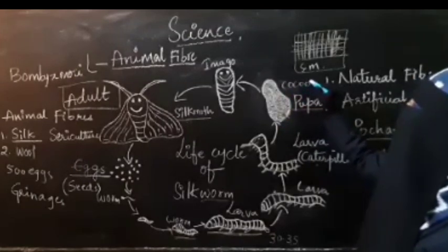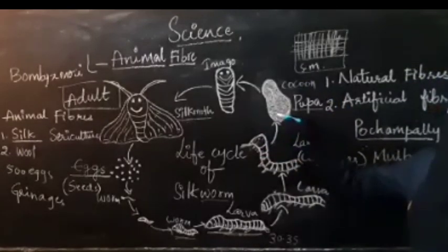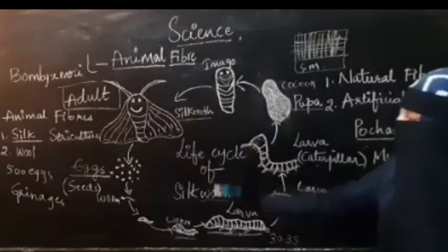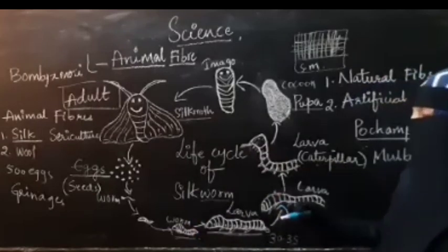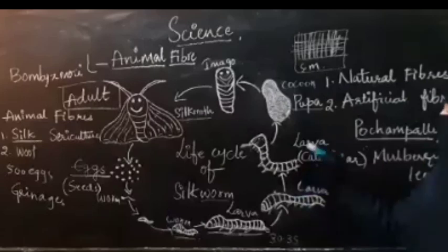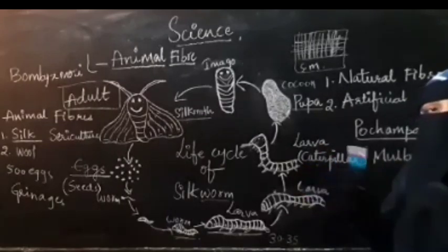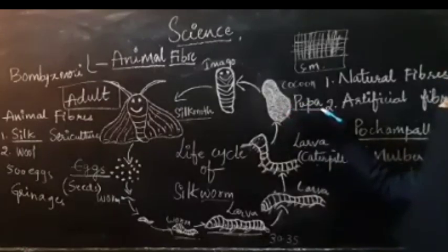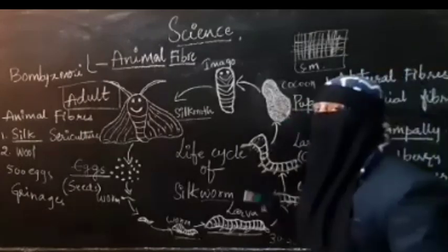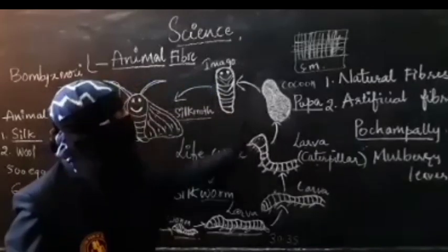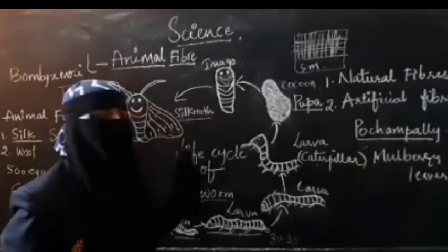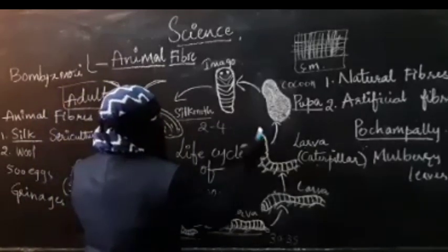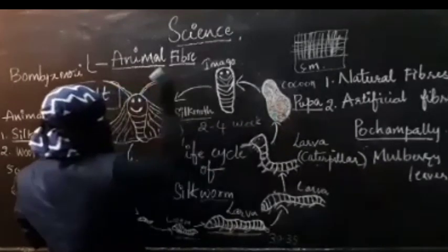The larvae weave a cocoon along its body made up of saliva, which hardens on contact with air. After the cocoon is formed — the pupal stage — the silkworm grows inside it. Within 2 to 4 weeks after cocoon formation, the caterpillar will change into a silk moth.